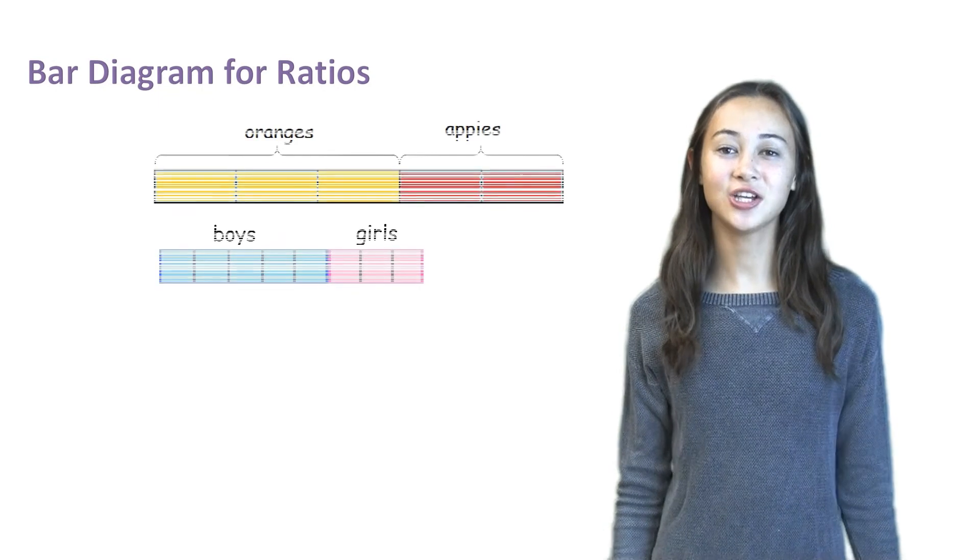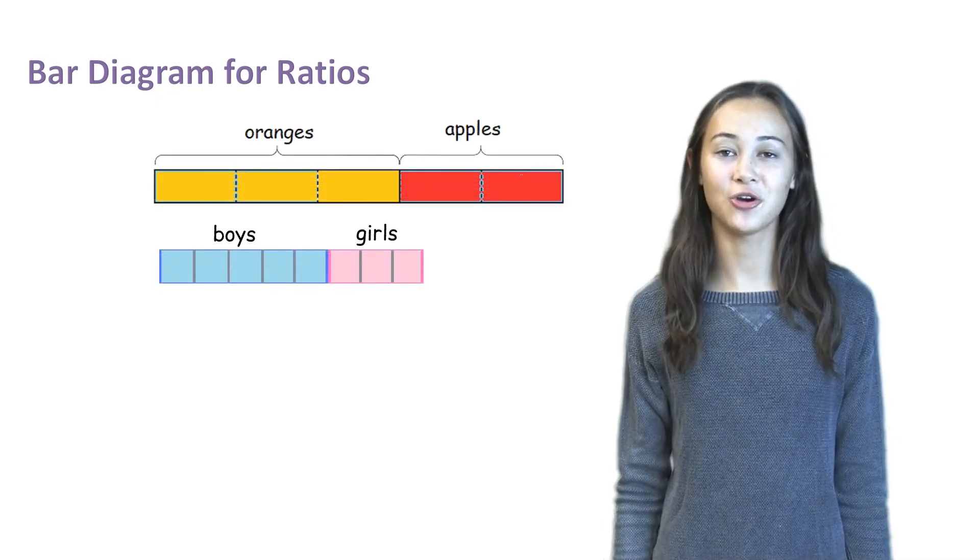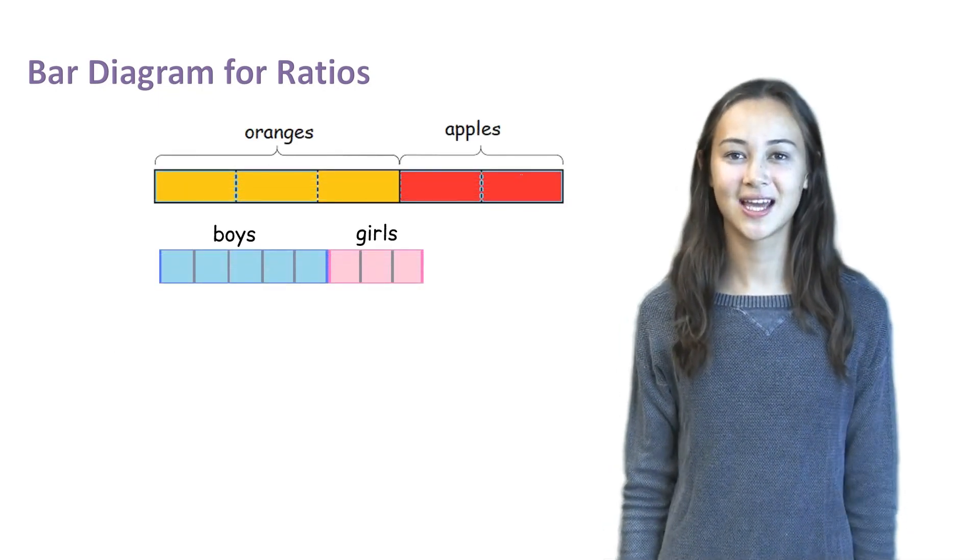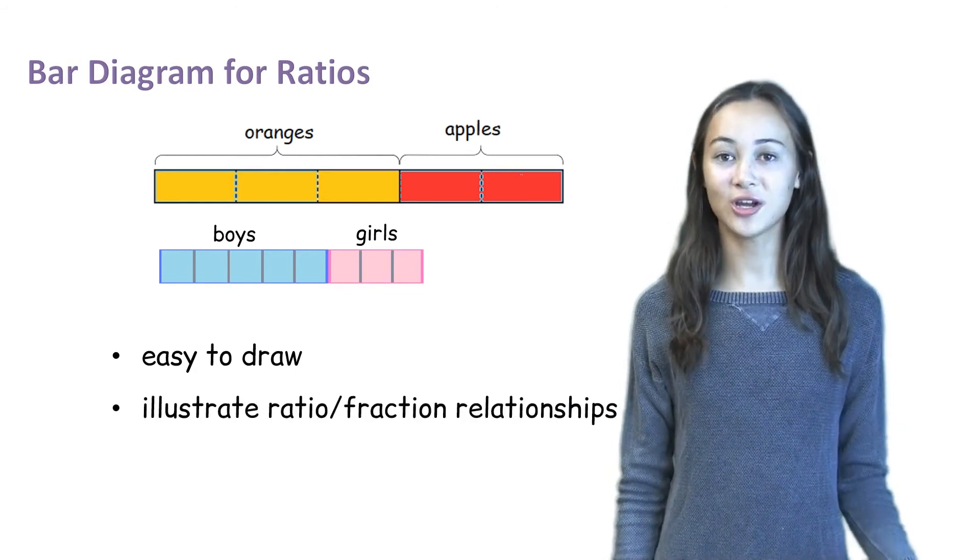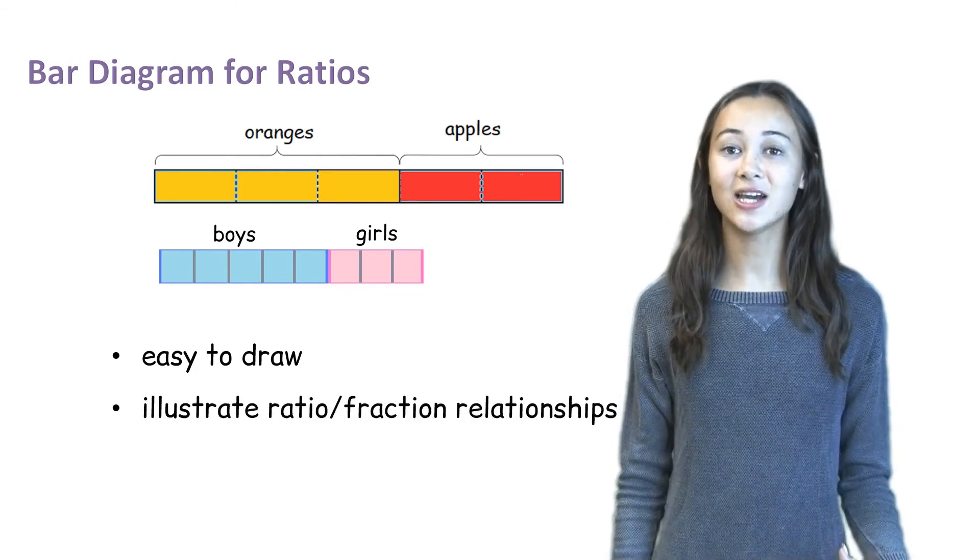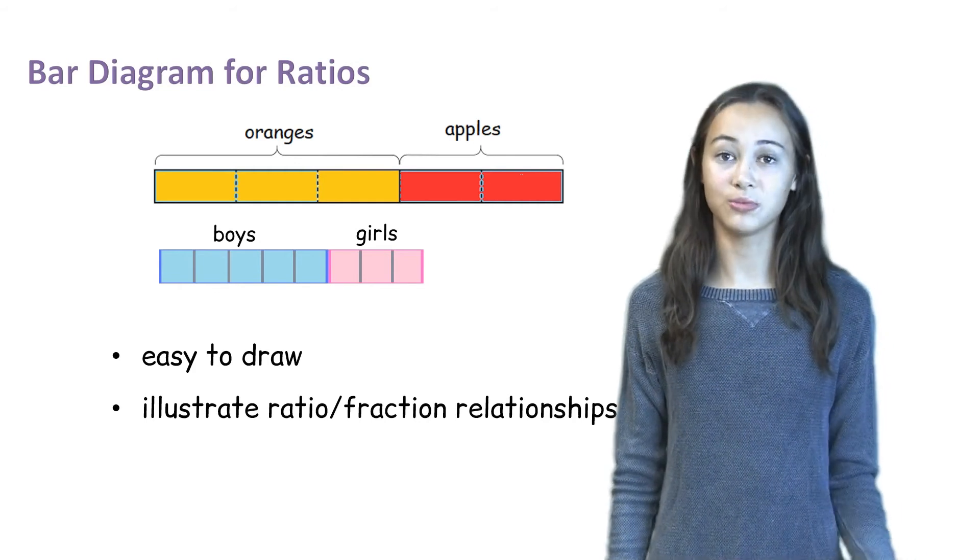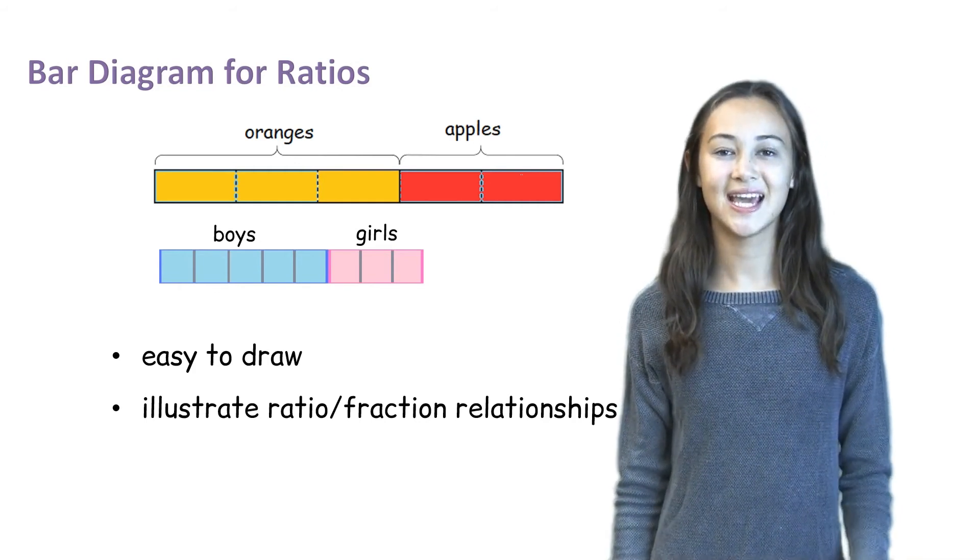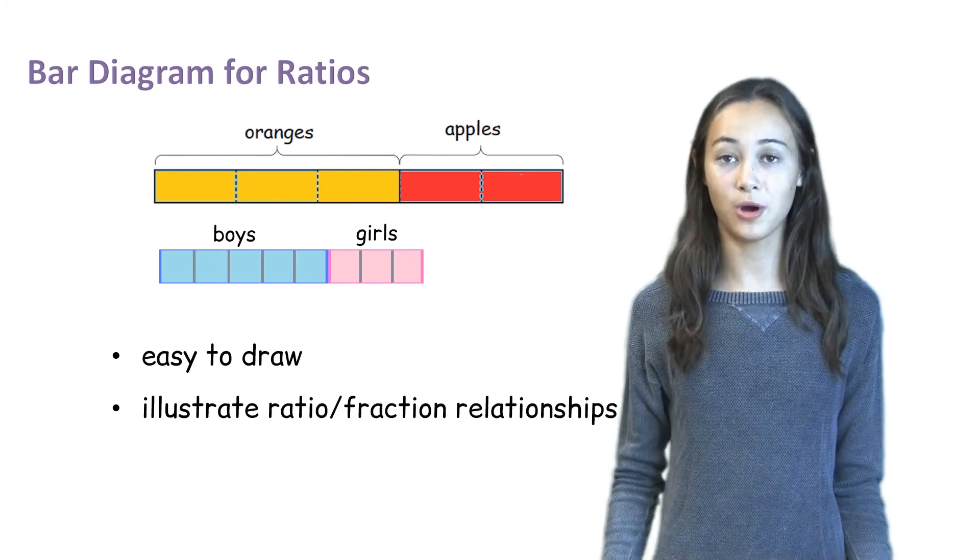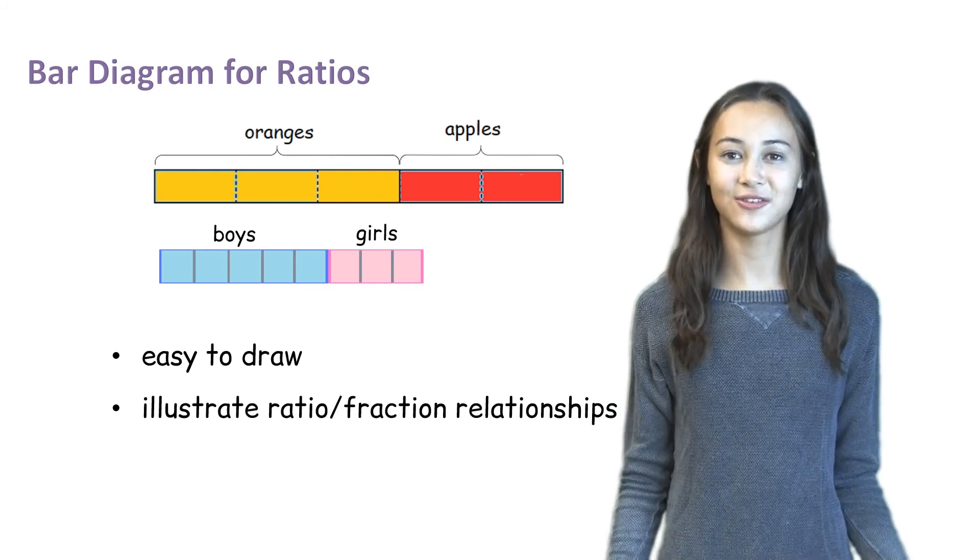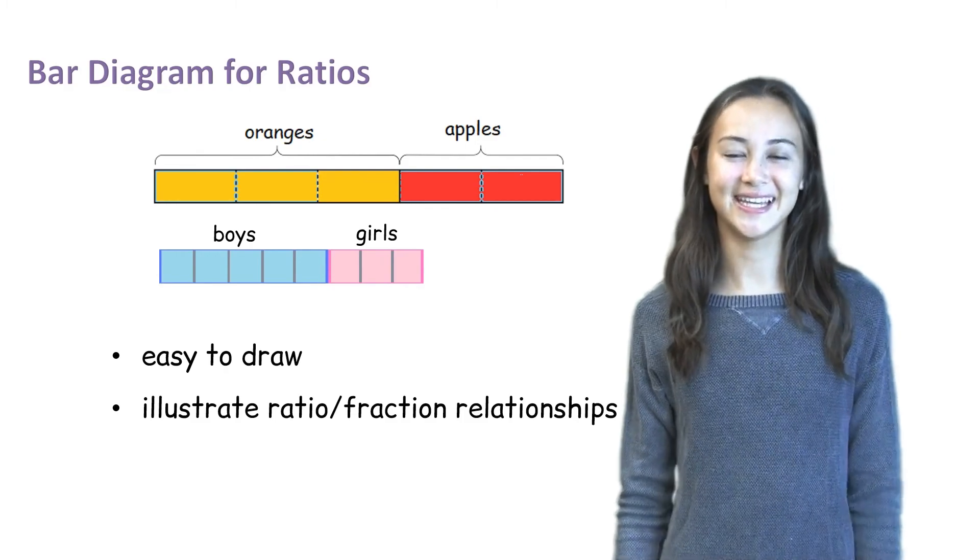Today we learned how to use bar diagrams to help us show ratio relationships. Bar diagrams are much easier to draw and is a more straightforward way to see relationships among groups of objects. In the next video, we're going to learn more examples of how to use a bar diagram to help us solve ratio problems. Thanks for watching.